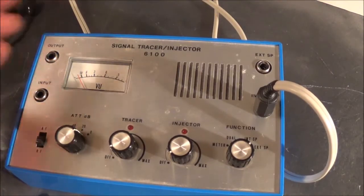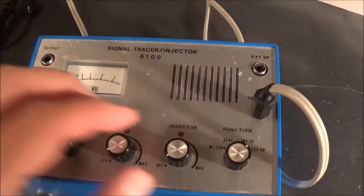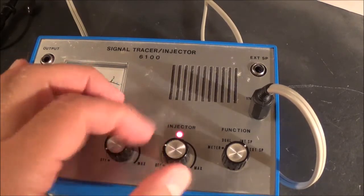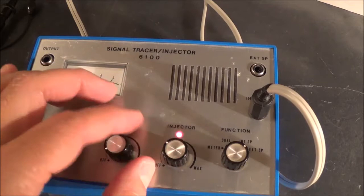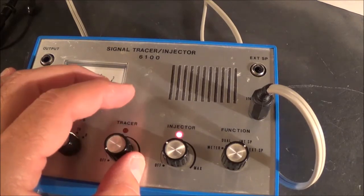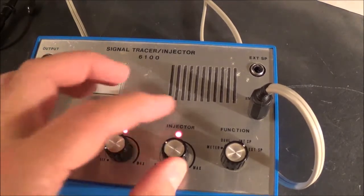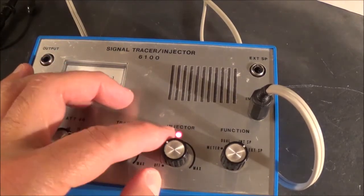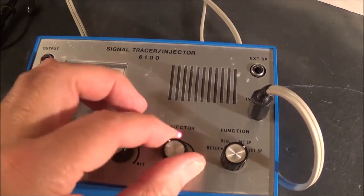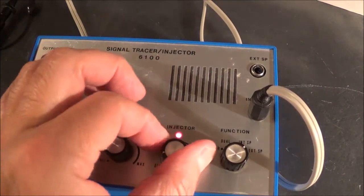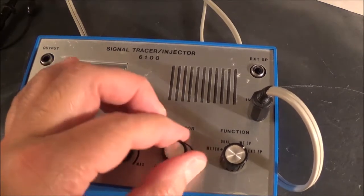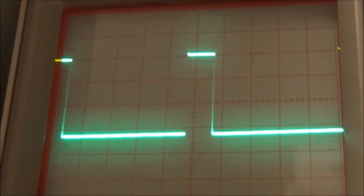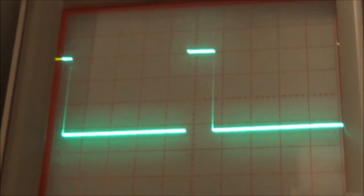To use the injector part, we just plug that in, then turn this on. Here's the LED as a visual indicator. This is also handy if you forget to shut it off because then you're going to run on the batteries, which has happened to me before. Now here's the signal coming out. Here's the square wave that I was talking about. Now I'm going to show the tracer part.